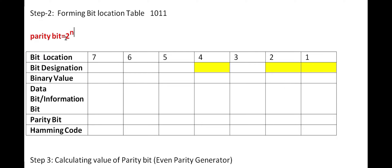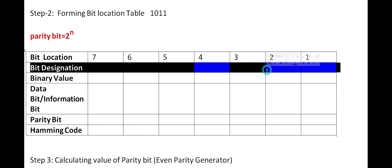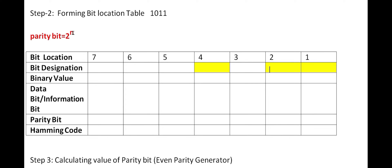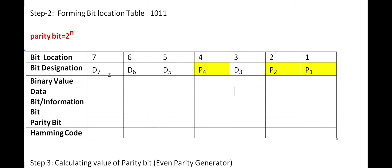The bit designation row tells you which bit locations hold data bits and parity bits. Parity bits occupy positions that are powers of 2: 2^0 = 1, 2^1 = 2, 2^2 = 4. Position 8 (2^3) does not exist in our 7-bit code. So positions 1, 2, and 4 are occupied by parity bits; the remaining positions are data bits.